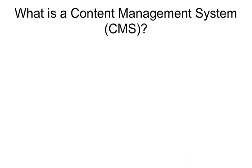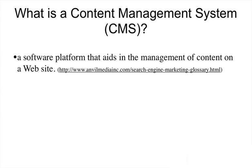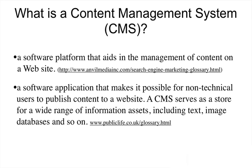So what is Joomla? When you ask that question, you're really asking: what is a content management system, or CMS for short? In its most basic form, it's a software platform that aids in the management of content on a website. A slightly better definition is it's a software application that makes it possible for non-technical users to publish content to a website. It serves as a store for a wide range of information assets — text, images, databases, videos, etc. Let's take a look at what a content management system looks like.